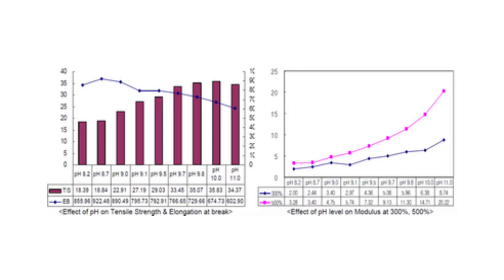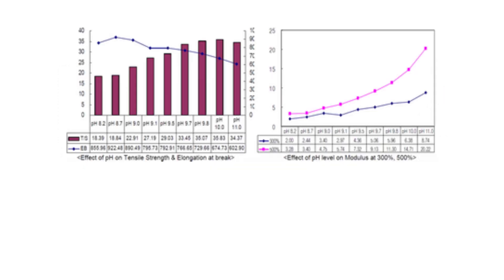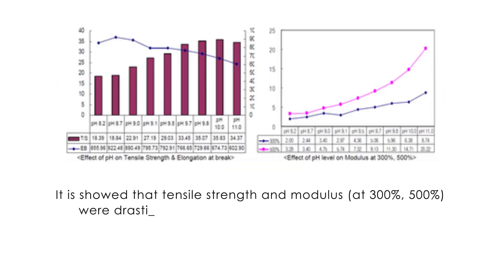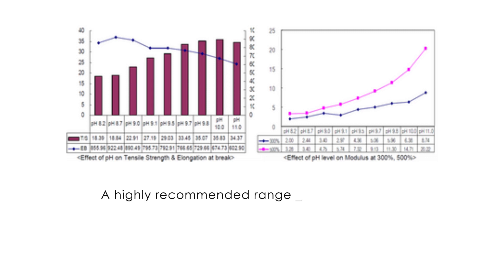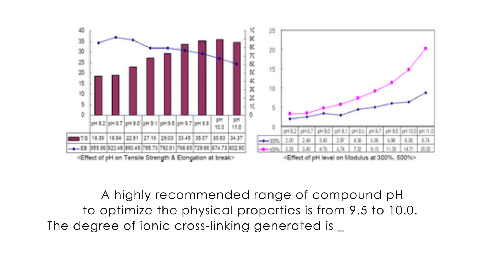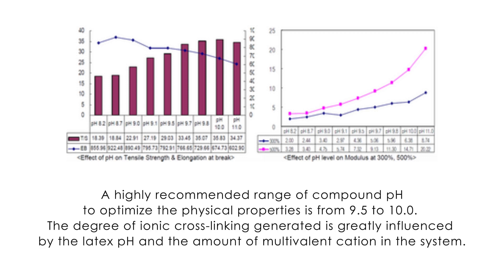It is shown that tensile strength and modulus at 300% and 500% were drastically increased as the pH of latex increased. On the other hand, elongation at break of the glove decreased as the pH of latex increased. A highly recommended range of compound pH to optimize physical properties is from 9.5 to 10.0. The degree of ionic crosslinking generated is greatly influenced by the latex pH and the amount of multivalent ions in the system.